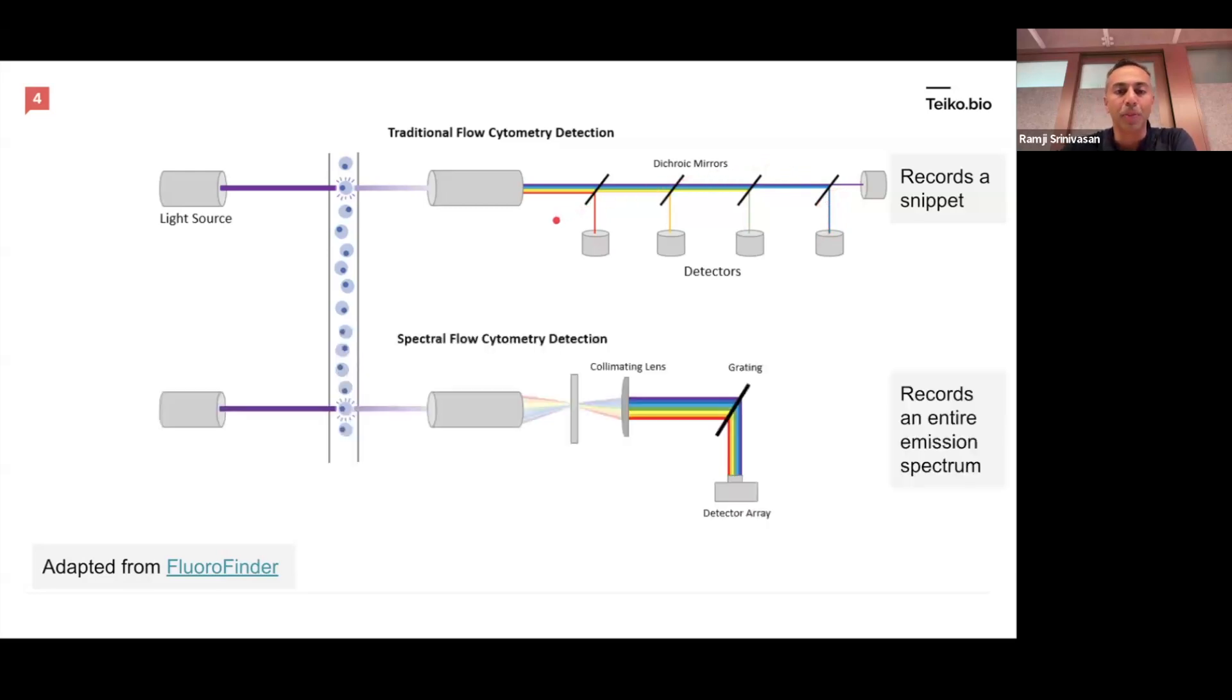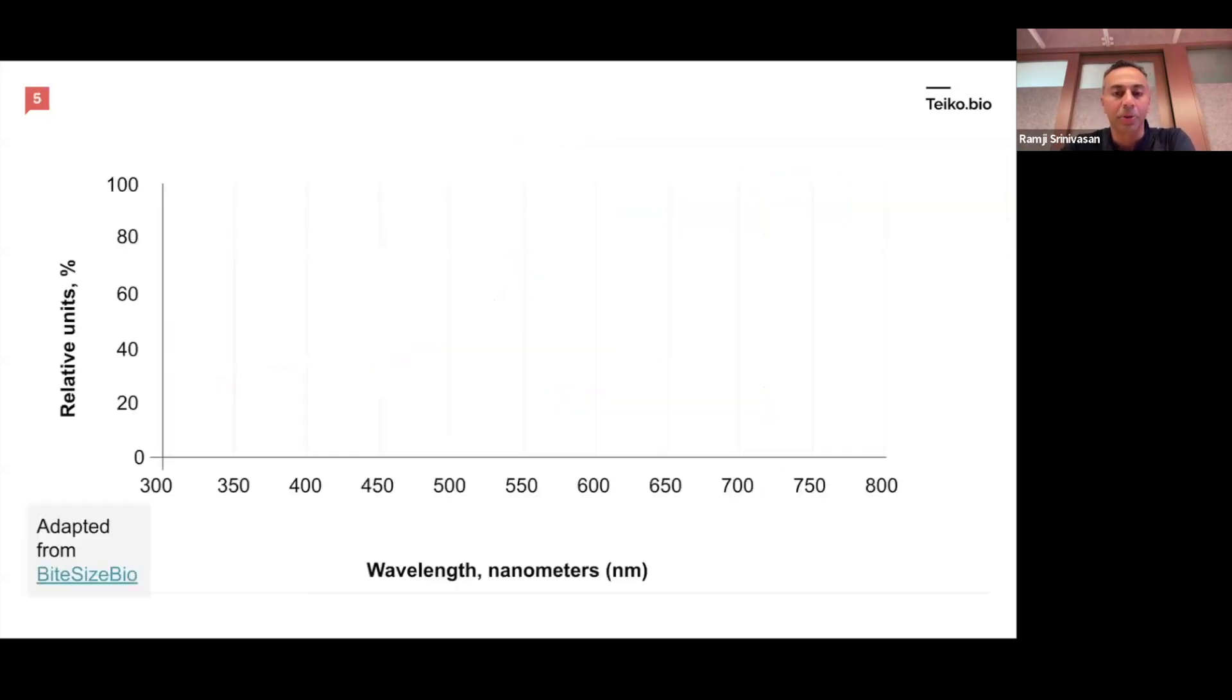Compare this to spectral flow, and similarly, you've got a laser that hits a cell and goes into a series of prisms and gates, and then instead goes to what's called a collimating lens, which keeps all of the light bars in parallel and then grating, and then will be recorded into a detector array, which allows you to record the entire emission spectrum. So we're going to see why this might be interesting.